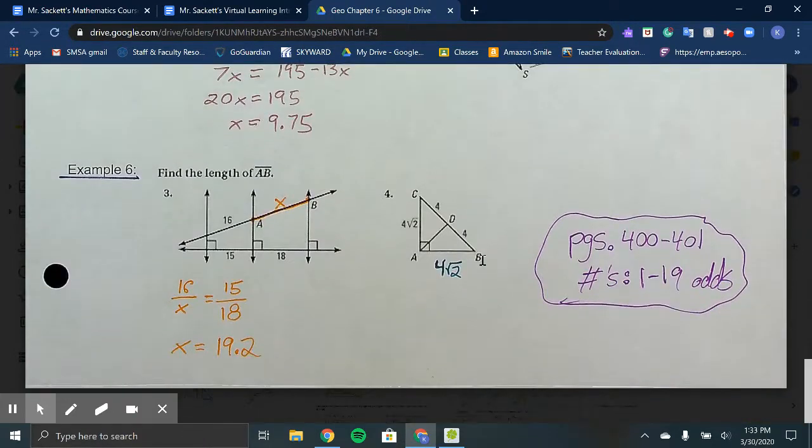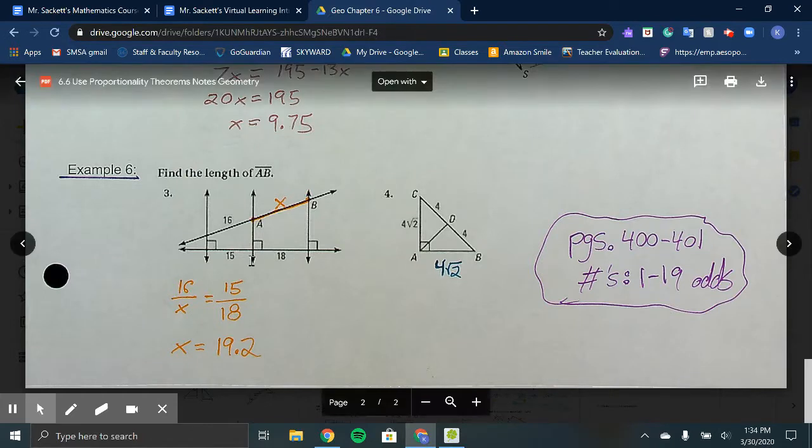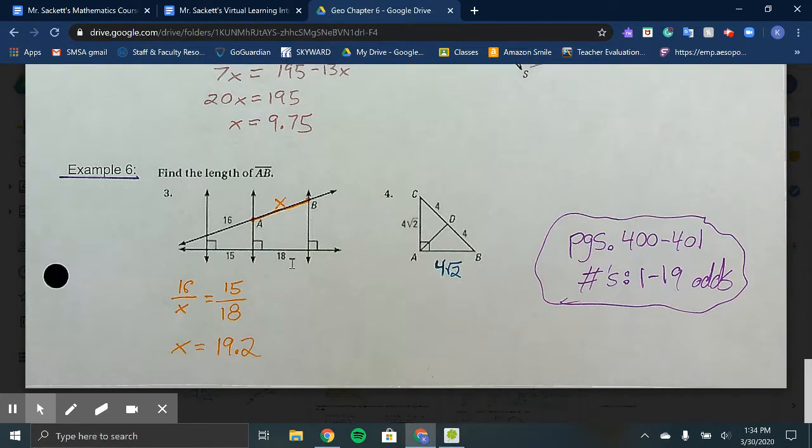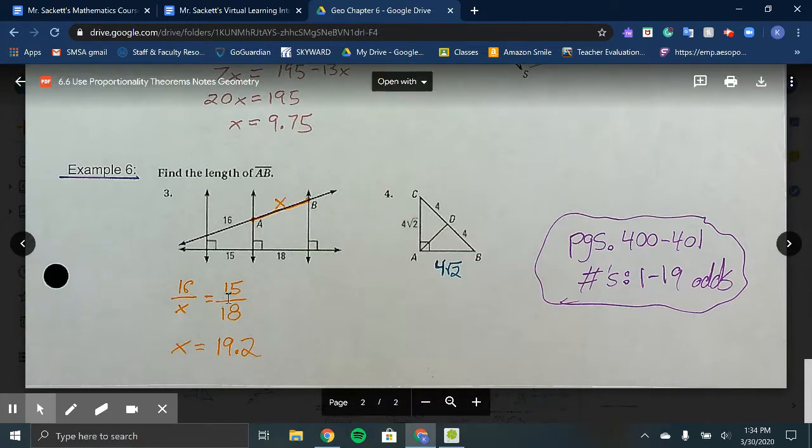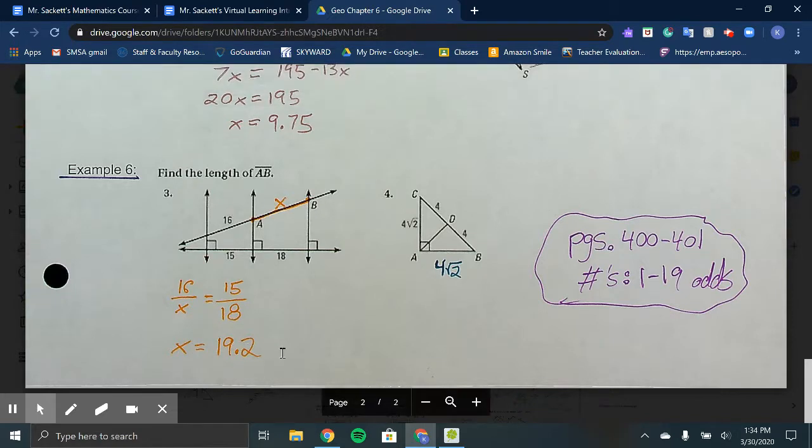The last example for this lesson, Example 6 asks us to find the length of AB in both examples. In example 3, we have AB, the missing segment, as the variable X. We know that has 16 along this side that corresponds with it. I set it up as 16 over X equals 15 over 18. Cross multiply and divide, 18 times 16 divided by 15, and X equals 19.2.